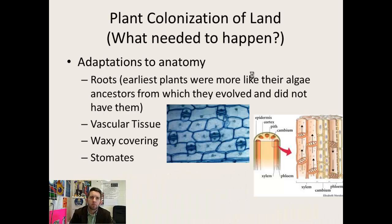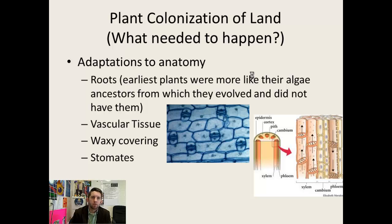As far as plant colonization of land goes, they had to make some adaptations to their anatomy. First of all, they needed roots — some way to obtain nutrients and water. If we look at the earliest plants, the charophytes and the mosses, they don't have roots. They don't have methods of transporting nutrients and water up through a stem, so they can't be very large or tall. In order to be tall and large, they had to have vascular tissue.